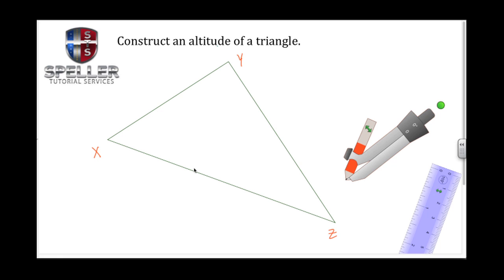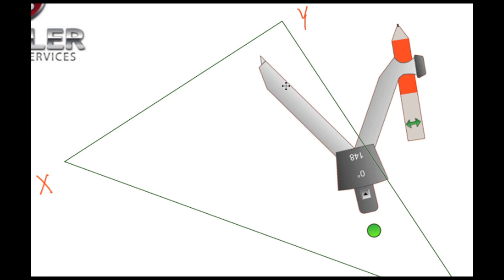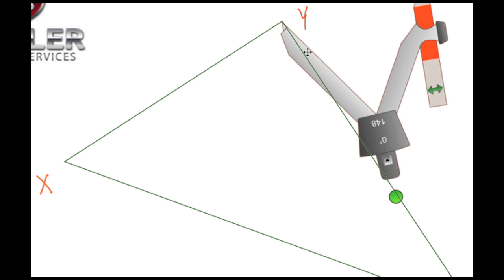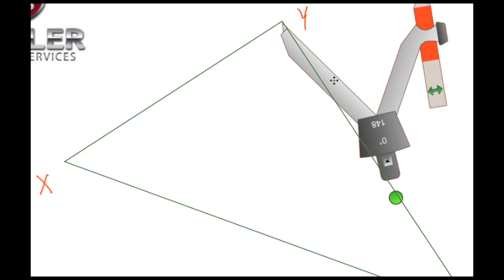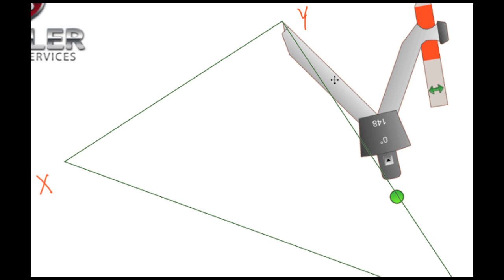We're going to begin by taking our compass tool and placing the pointy end of the compass on vertex Y. Once there, we need to ensure that the radius set for the compass is large enough so that it will intersect the opposite side XZ at two different places. Let me get this seated properly.